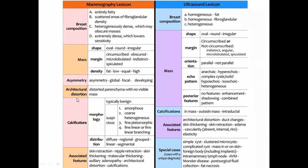Architectural distortion is the presence of acutely angled or spiculated lines in the absence of a definite mass. If microcalcifications are present within it, stereotactic biopsy is definitely required. Associated features to note include skin retraction, skin thickening (anything more than 2 mm), nipple retraction, skin trabecular thickening, and axillary lymphadenopathy.